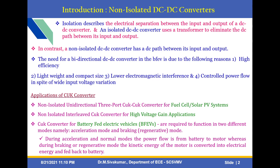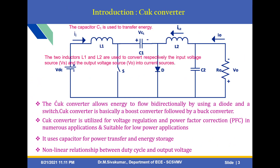An isolated DC-to-DC converter uses a transformer to eliminate the DC path between input and output. In contrast, a non-isolated DC-to-DC converter has a DC path between its input and output, which we are designing with MATLAB. The need for a bidirectional DC-to-DC converter for electric vehicle batteries is due to requirements such as high efficiency, lightweight components, compact size, lower electromagnetic interference, and controlled power flow despite wide input variations.